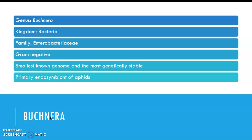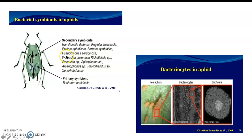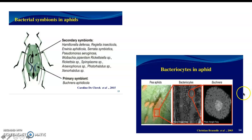Buchnera is the primary endosymbiont of the aphid. In this picture we can see the aphid, and it's pointing to G — that's where you find the secondary symbionts such as Rickettsia, Wolbachia, and Pseudomonas — while B is where we have the primary symbiont, which is the Buchnera. On the right we can see an aphid; the middle picture shows the bacteriocyte where Buchneras are housed within the aphid, and the further right picture shows the bacteriocyte with the Buchnera bacterium inside.